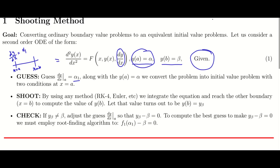Along with this initial condition, we integrate this differential equation. That means we are choosing two things: one is the guessed derivative, and the other is given — y at x equals a is alpha. That means two initial conditions, making it an initial value problem. We integrate the differential equation and reach the other boundary at x equals b.